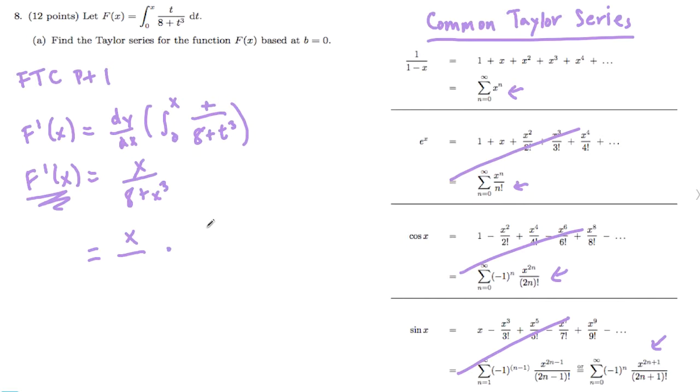And this is going to be over something, and then times 1. And then at the bottom, what we want is we want 1 minus x. So this 8 should turn into a 1. So we can accomplish that by dividing by 8. So factor out another 8 here. So now we have 1 plus x cubed over 8. Over 8.